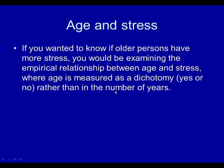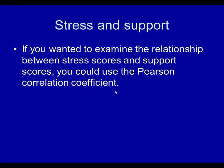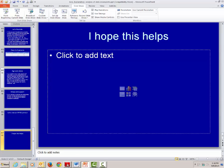If you wanted to know if older people have more stress, you would be examining the empirical relationship between age and stress. Because age is measured as a dichotomy — meaning yes or no rather than the number of years — you would employ the t-test for independent data, since you are comparing two groups on an interval variable. If you wanted to examine the relationship between stress scores and support scores, you could use the Pearson correlation coefficient.